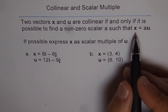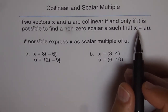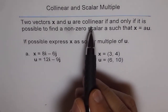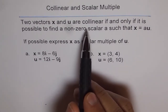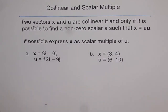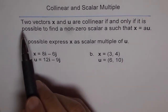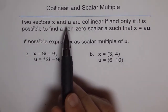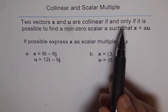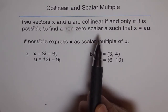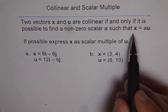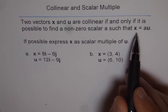Let's explore this definition. When we say two vectors are collinear, we are trying to say that they are in the same line — that means they are parallel and exactly in the same line. They could be in opposite directions. We say two vectors x and u are collinear if and only if it is possible to find a non-zero scalar a such that x is equal to a times u.